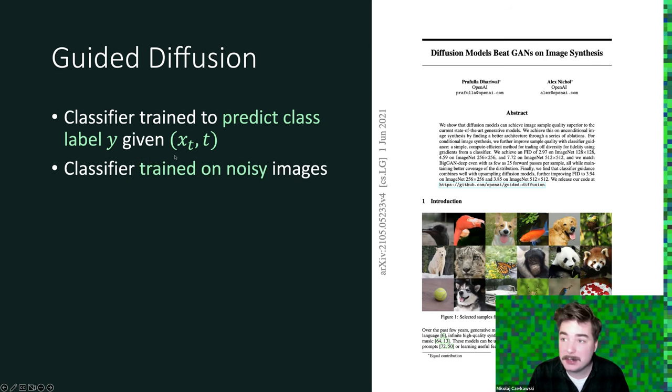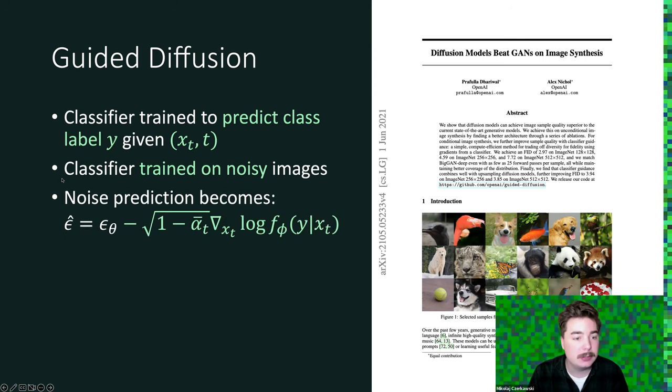Basically, we need to train it on noisy images, just like we train the generative model. And when we predict noise, we can essentially add an additional term to our basic approximation based on the neural network parameters. The derivation is in the paper, but essentially, it's a matter of adding an additional term that is based on the gradient.